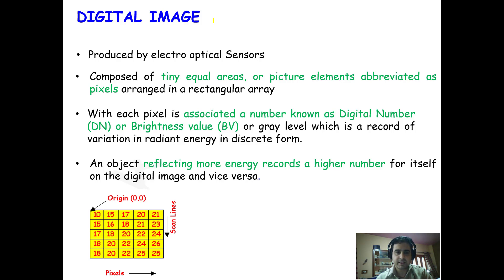The image is produced by electro-optical sensors which are onboard the satellite carrying the sensor. It's composed of tiny equal areas or picture elements, abbreviated as pixels, and each pixel has an associated number.